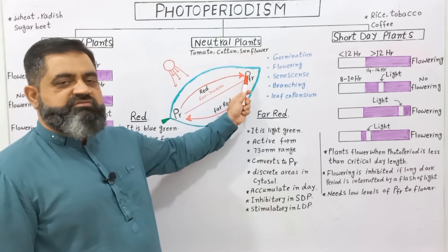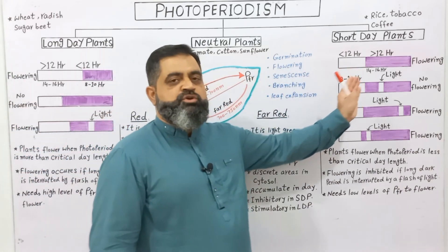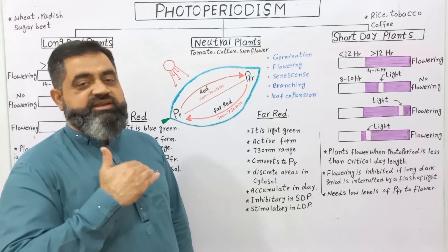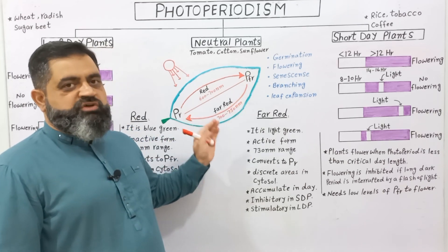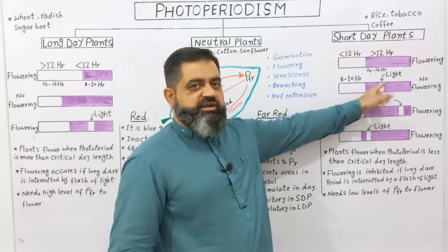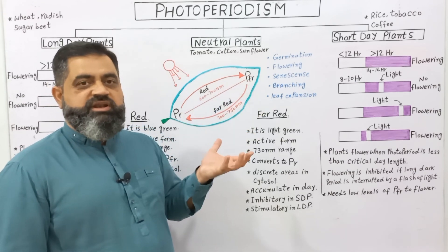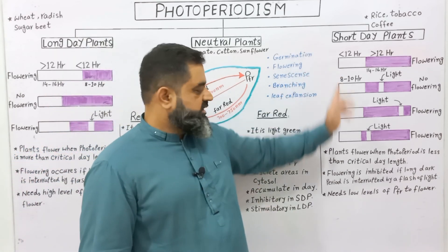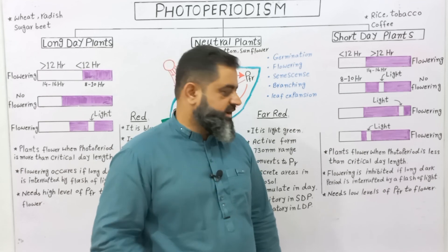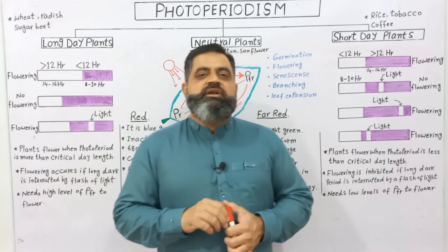Number two, flowering is inhibited if the long dark period is interrupted by a flash of light. In the daytime, phytochrome red is converted into Pfr; during the night, Pfr is converted back into Pr. Because nights are very long, at the end of the night there is no or very little phytochrome far red in the cells. The plant therefore determines it is a short day and long night, and flowers. However, if the dark period is interrupted by a flash of light, phytochrome red is again converted into Pfr, so there will be more Pfr at the end of the night and flowering will be inhibited. Short day plants need low levels of Pfr — a minimum amount of phytochrome far red — to flower at the end of the night.